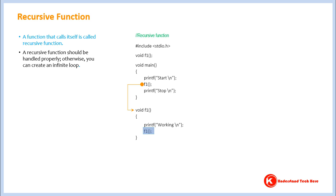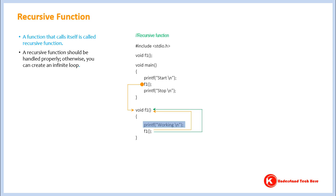When f1 is called again, the computer goes from where it is called to where the definition of the function is. This is the second time the computer has come to this point. It starts executing the function again, encounters the call to f1, and goes back to the definition — this is the third time. Look carefully: when is this cycle stopping? Well, it's not stopping. Therefore, handle recursive functions carefully, otherwise, like here, an infinite loop may be created.